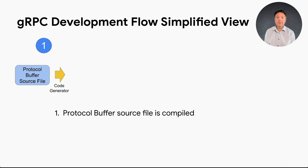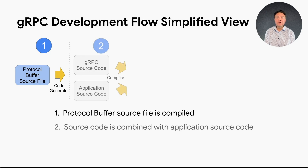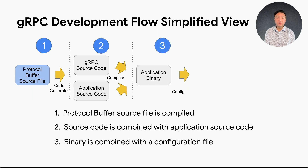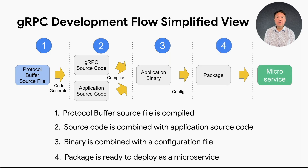Now that we've touched on the components and benefits of gRPC, let's walk through a simple microservices example that fits all the pieces together and demonstrates how protocol buffers and gRPC are used as part of a developer workflow. Step one starts by using protocol buffers to define in a source file the structure for the data you want to serialize — an ordinary text file with a .proto extension. Once you specify the messages and services, you use the programming language specific protocol buffer compiler to generate gRPC client and server code, including code for populating, serializing, and retrieving your RPC messages. Next, the gRPC and application source codes are compiled together to deliver a binary. The binary object can then be combined with application-specific configuration information to create a package, which can then be deployed to instantiate a microservice.